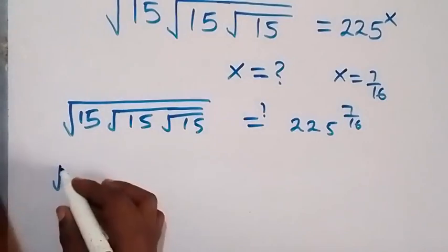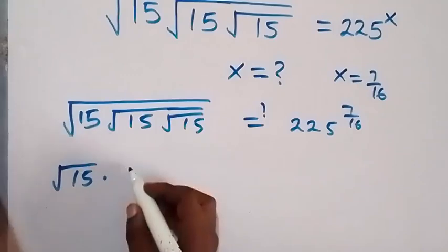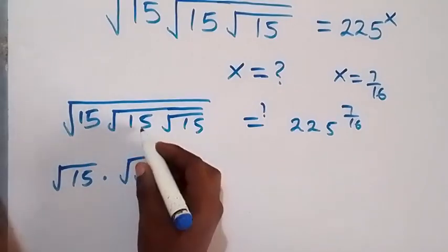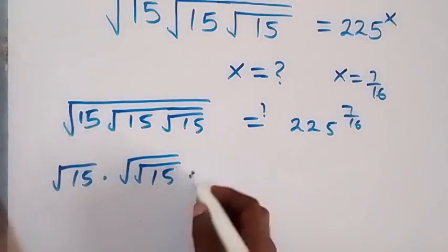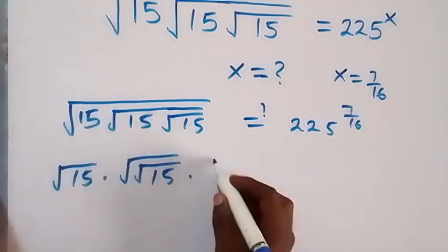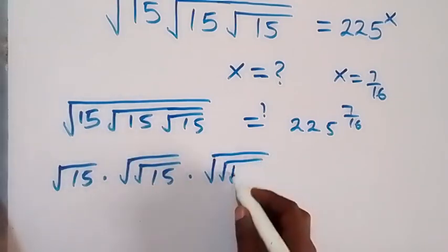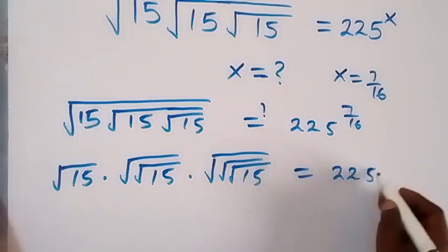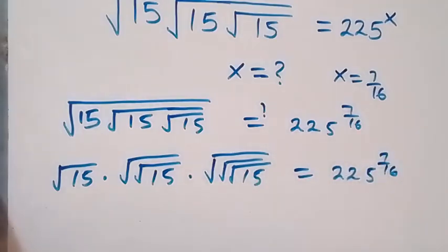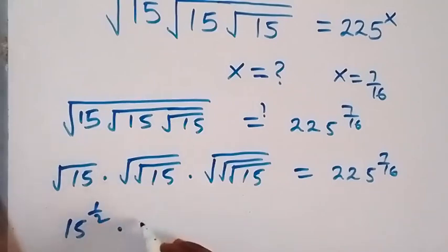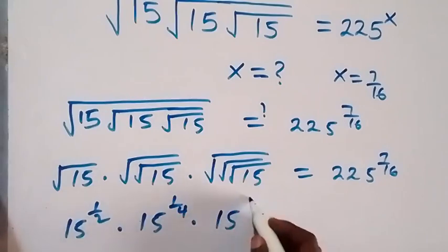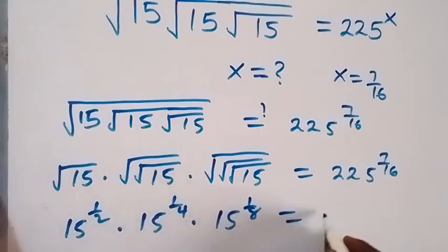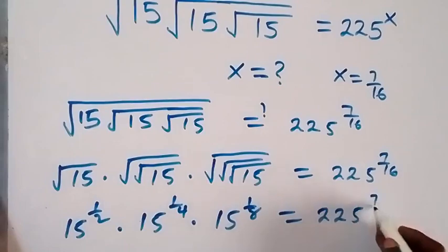This will be root 15, times here we have a 2nd root for this 15, which contains 2 roots, then times this last one contains 3 roots. We have square root of square root of, then times square root of 15, equals to 225 raised to power 7 over 16. What this means: 15 raised to power one half, times 15 raised to power 1 over 4, times 15 raised to power 1 over 8, equals 225 raised to power 7 over 16.